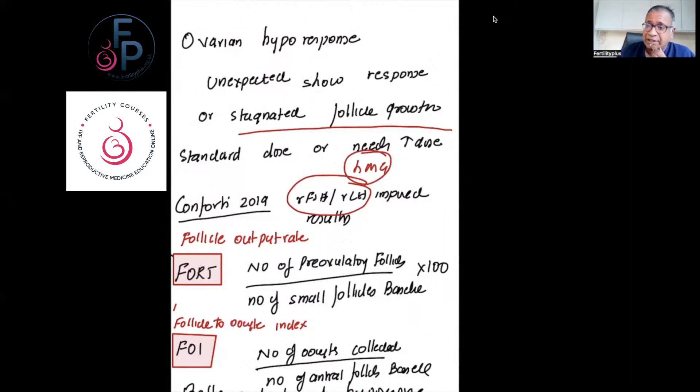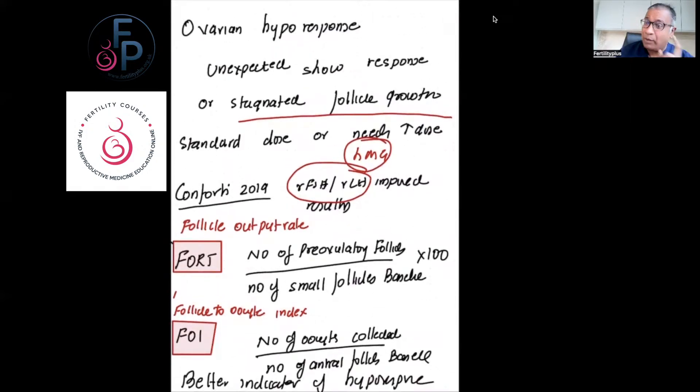I think it's very important to use two factors to assess response, which may help you understand why and how your response is poorer. One is the follicle output rate—it's the number of pre-ovulatory follicles divided by number of small follicles at baseline. What follicles did you start with? You started with 22 and then you had only eight follicles coming—that is poor. You also look at follicle-oocyte index, which is the number of oocytes collected over the number of baseline follicles. If your oocyte numbers are significantly lower from the baseline—so you get 20 follicles and you get four oocytes—that's a poor follicle-oocyte index. It's a better response assessment for hypo-response.